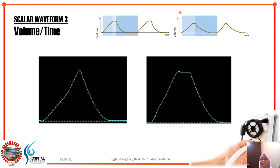Now let's move to the third waveform: volume against time. The volume-time shape is almost similar in both volume and pressure mode, but in pressure mode the peak volume changes with every breath because it is not the set target. In volume mode it will be static if there is no resistance. The volume waveform will generally have a mountain peak appearance, or a flattened area at the peak if an inspiratory hold is applied to check for P-plat.